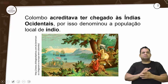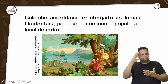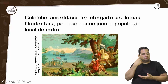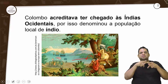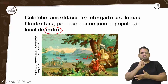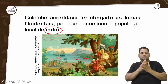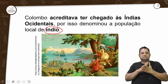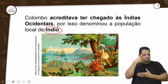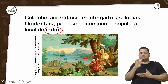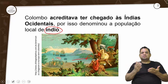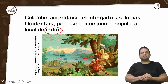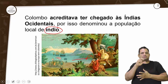Colombo achava que tinha chegado às Índias. O povo que encontra recebe o nome de índio — esses povos indígenas — porque ele achava que era as Índias Ocidentais, a parte ocidental da Índia. Por isso dá o nome de índio.